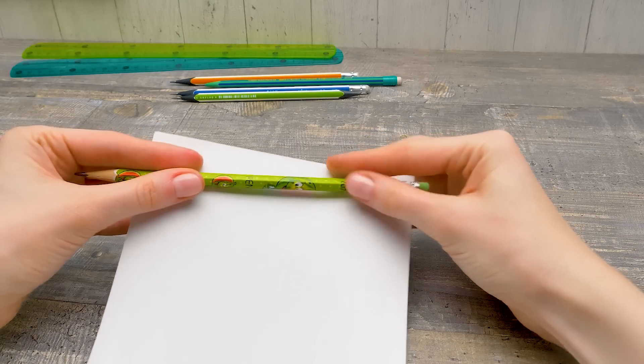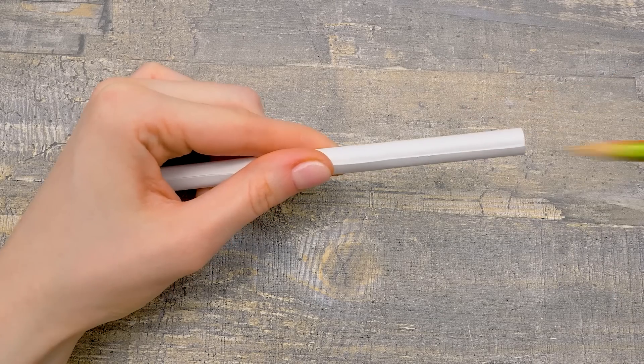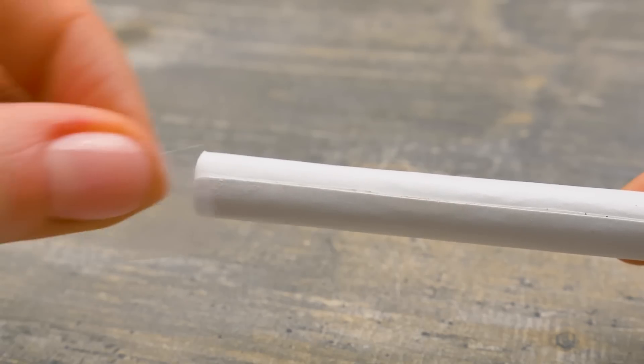Now we need a piece of plain paper and a pencil. Let's roll it up like this, nice and tight. The tube should be sturdy enough. And now I can take the pencil out.